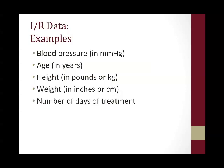Some examples of interval ratio data include blood pressure in millimeters of mercury, age in years, height in inches or centimeters, weight in pounds or kilograms, and number of days of treatment. You can see all these measures have equal intervals between the numbers on the scale, and you can get a blood pressure that represents any number on the number scale.